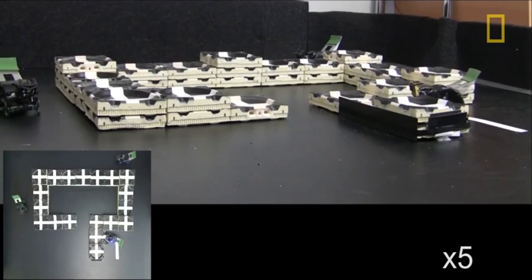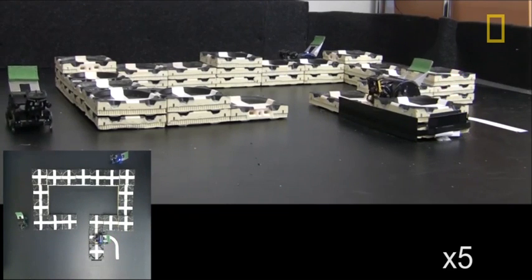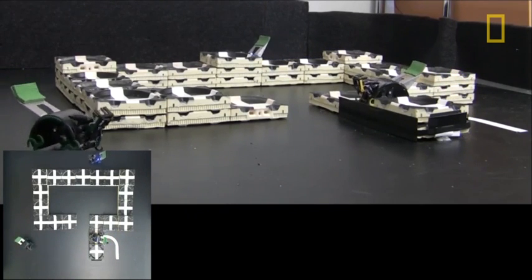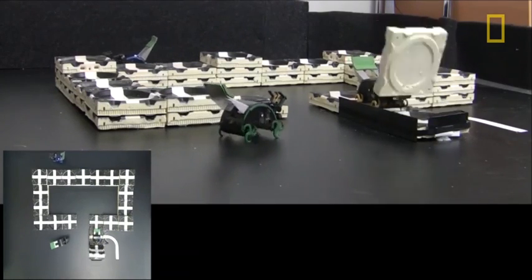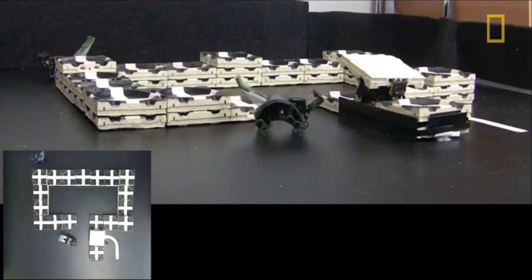This video is sped up five times because the robots actually move very slowly. They're capable of moving faster, but we have them moving very deliberately. They're being very careful to get everything right. Sort of measure twice, cut once.